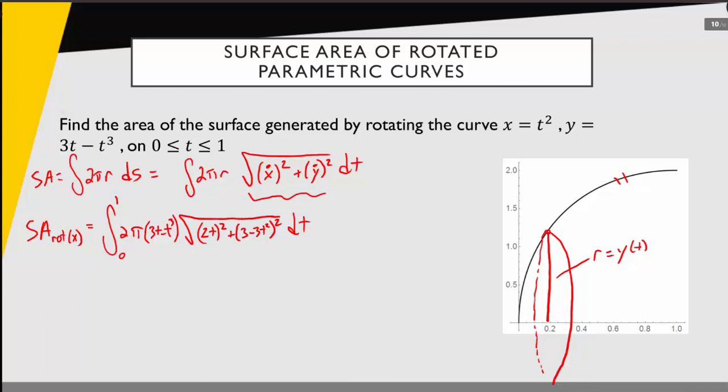Now what changes if we're looking for the surface area as we rotate about the y-axis? Well, this really is going to be a new integral, but a lot of the pieces are going to be the same. We're still working with the same curve, so because we're working with the same curve, our representation for ds is going to be exactly the same. So we don't need to change any of that.